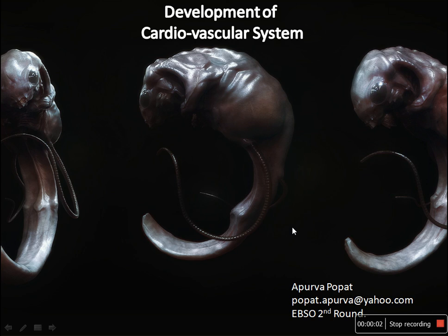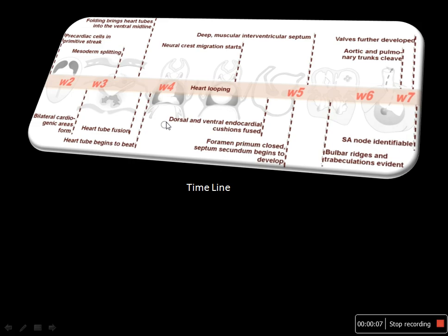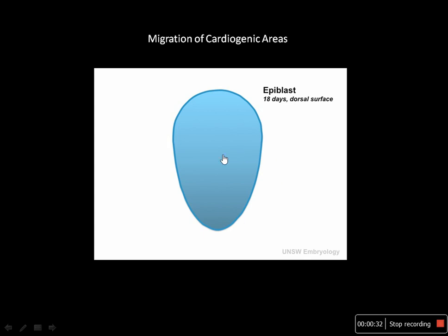We are going to discuss the development of the cardiovascular system. This video is prepared for the second round of L-SAVIOR. Here is the overview of the development of the heart and this is the timeline. These are the weeks: first there is development of cardiogenic areas in the epiblast, then formation of heart tubes, lateral folding, heart looping, septations, and finally the development of vasculature of the heart.